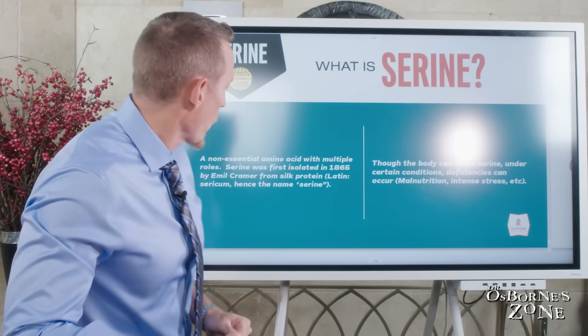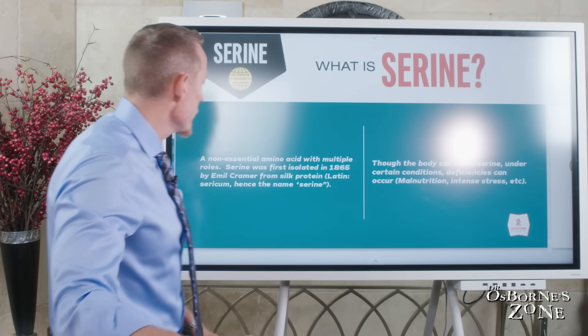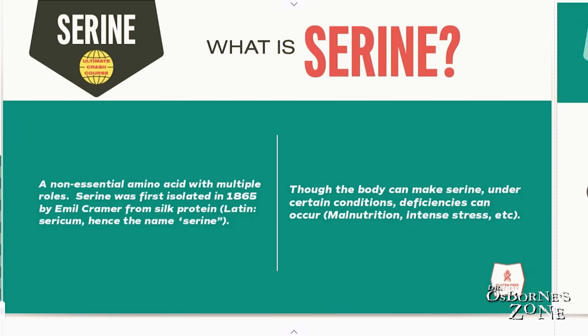Tonight we're diving into serine. Serine is a very important amino acid. You can see it's a non-essential amino acid, meaning that our body can produce it, and it's got multiple roles. It was discovered and isolated in 1865 by Emil Kramer from silk protein, the Latin term sericum, basically establishing that name serine.